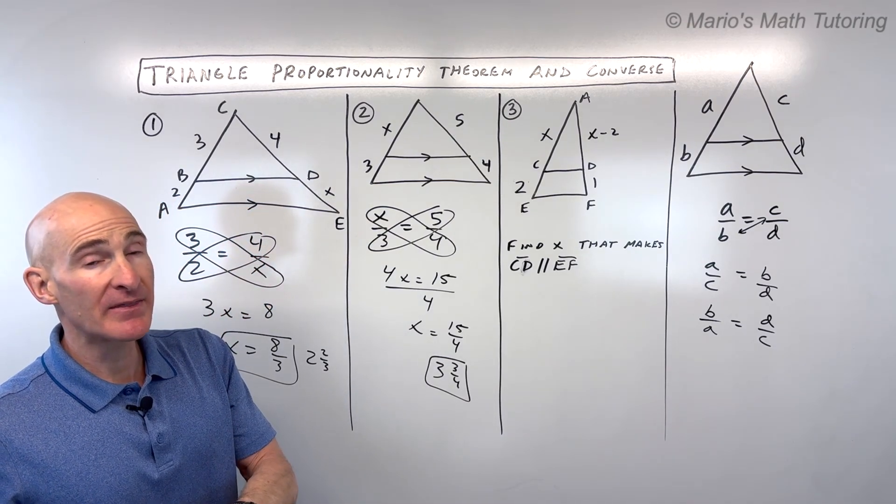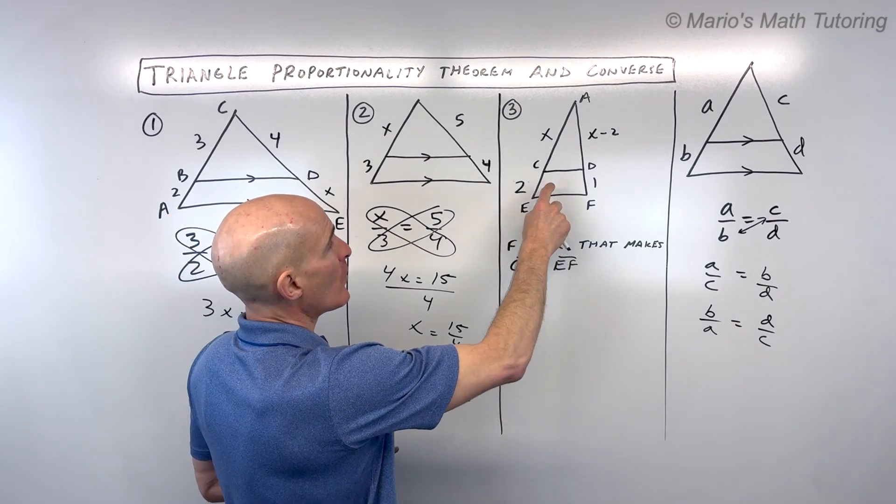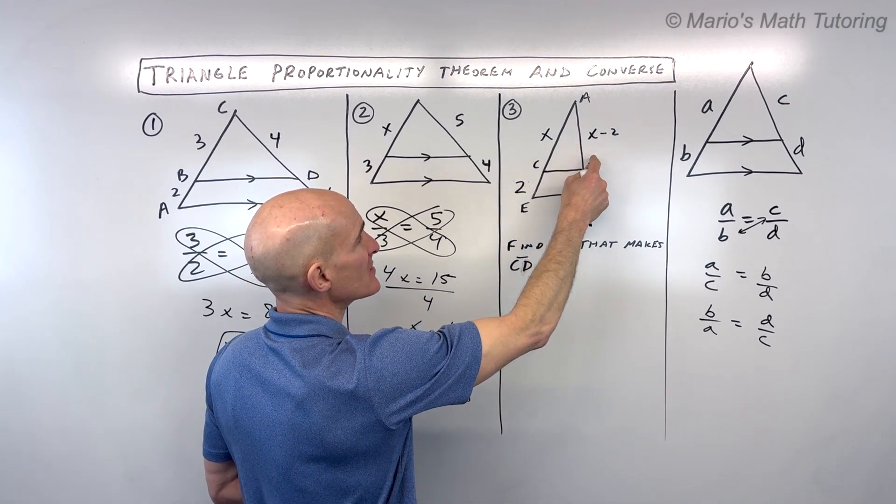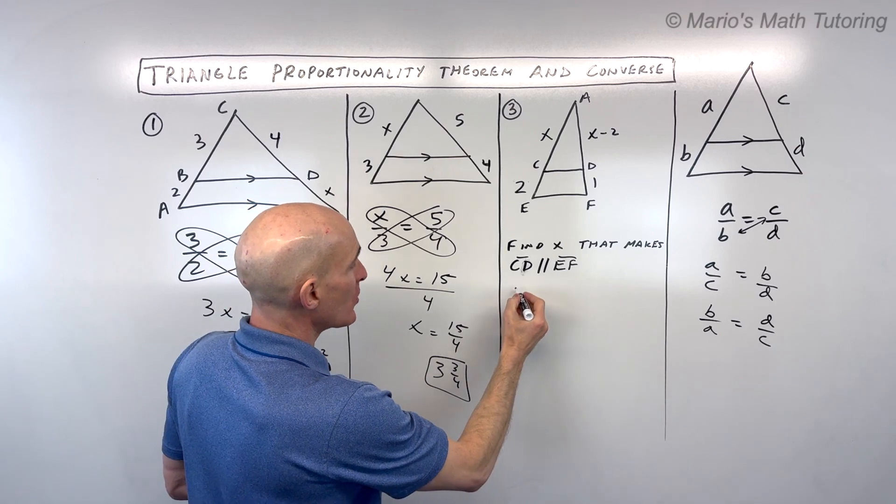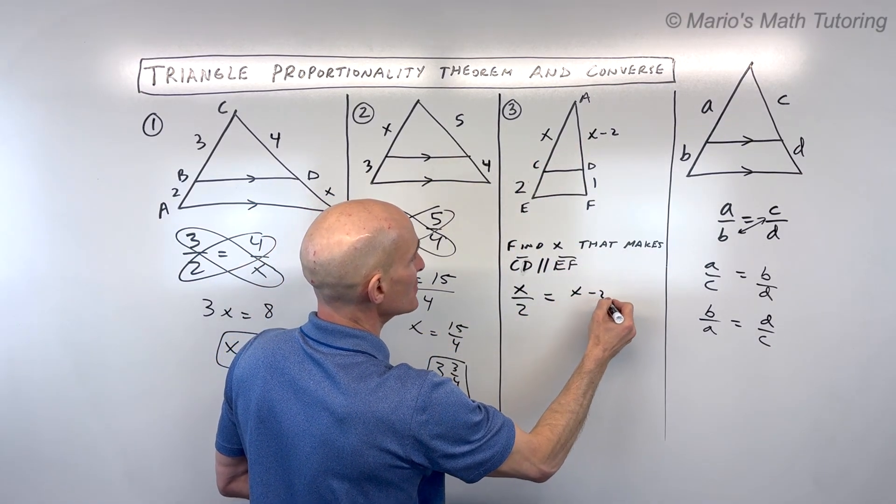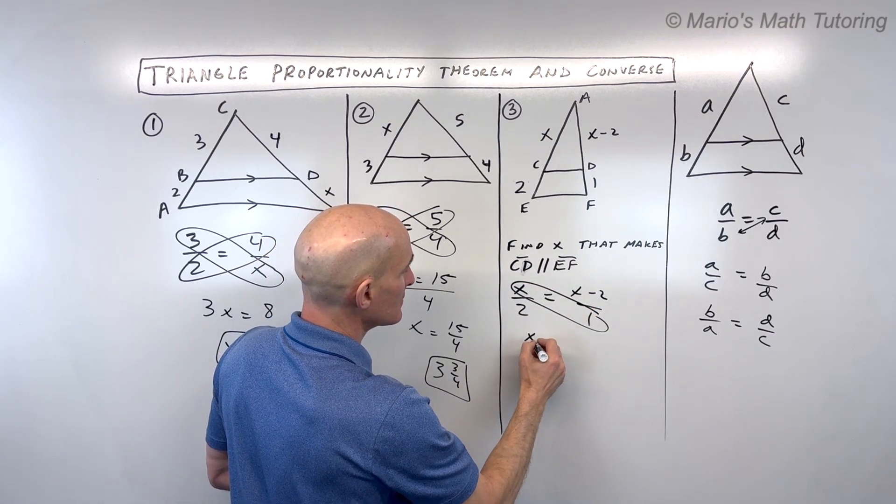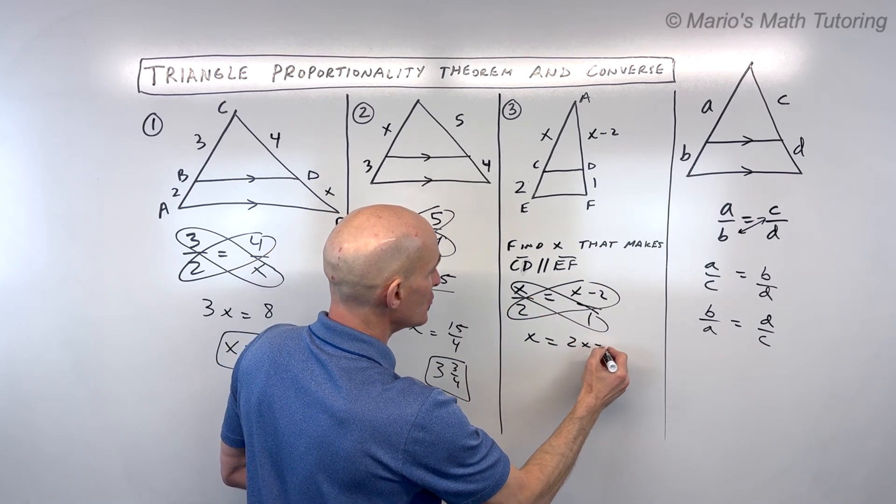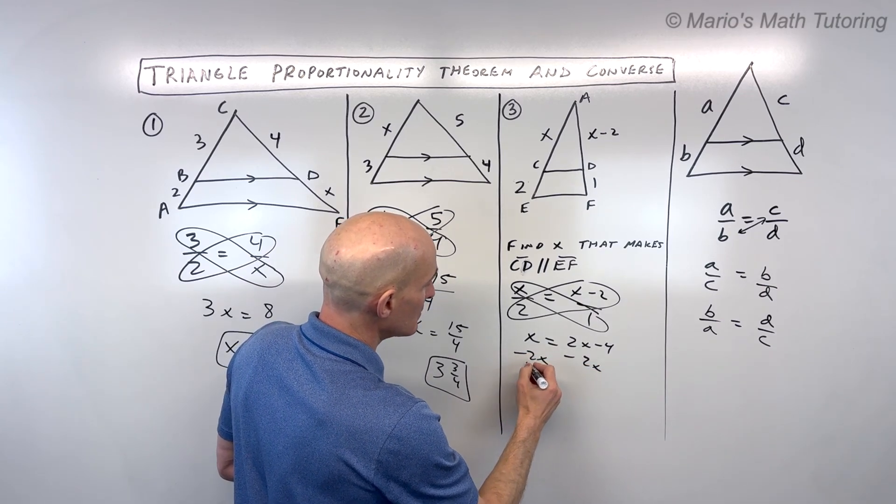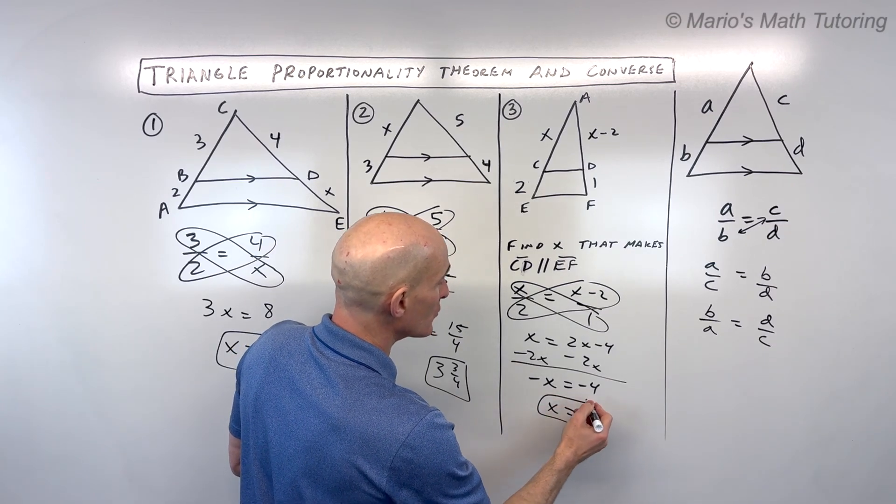Now for number three, we're looking at the converse of the triangle proportionality theorem. What that says is that if we want to show that CD is parallel to EF, then the ratio of x to 2 has to be the same as x minus 2 is to 1. So let's set up that proportion: x is to 2 as x minus 2 is to 1. Cross multiply, x times 1 is x, 2 times x minus 2 equals 2x minus 4. Distribute the 2, subtract 2x from both sides, that gives us negative x equals negative 4, divide both sides by negative 1, and x equals 4.